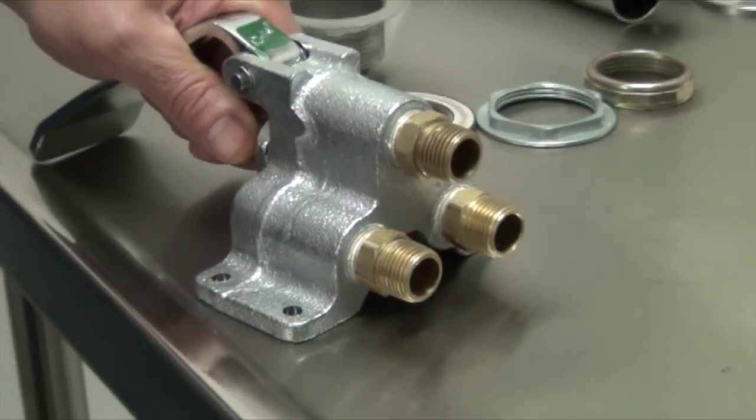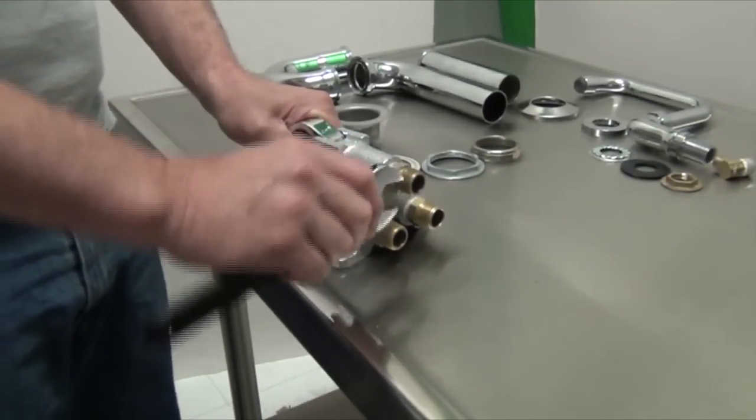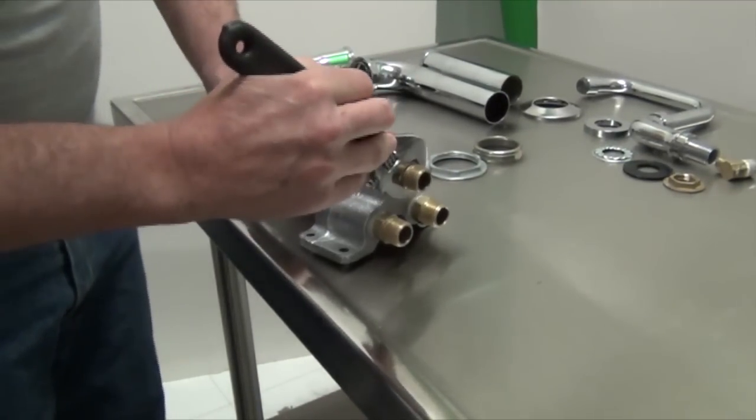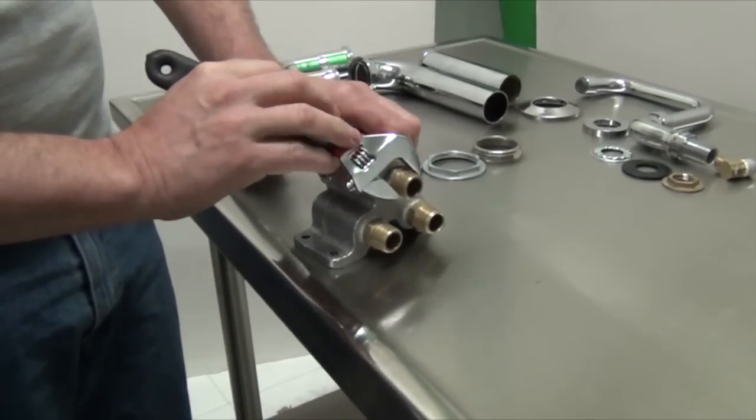The next step is to install three brass pipe thread adapters into the knee valve as shown. Please note that these adapters are not supplied by Advanced Tabco. Use a wrench to tighten the adapter securely.